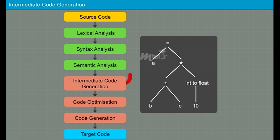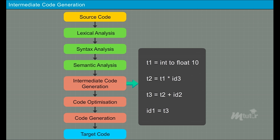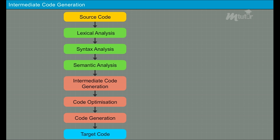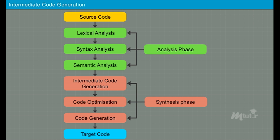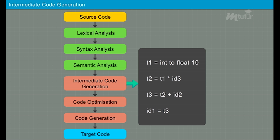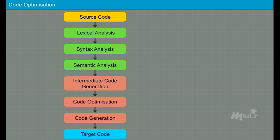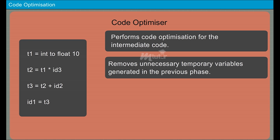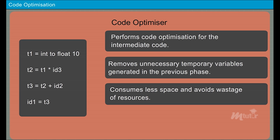After semantic analysis, the intermediate code generation phase generates an intermediate code of the source code, which makes it easier to translate into the target machine code. This phase acts as a bridge between the analysis phase and the synthesis phase. The code optimizer then takes the intermediate code as input and performs code optimization — it removes unnecessary temporary variables generated in the previous phase, so the compiler takes less space and avoids wastage of resources such as CPU and memory.